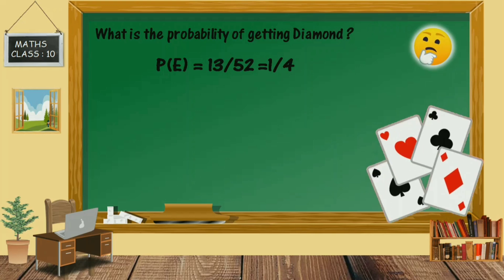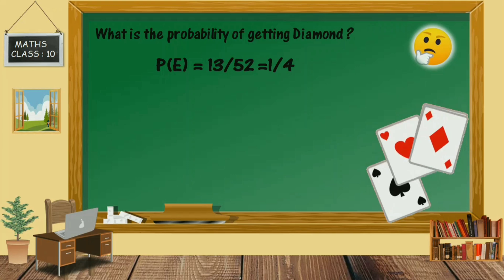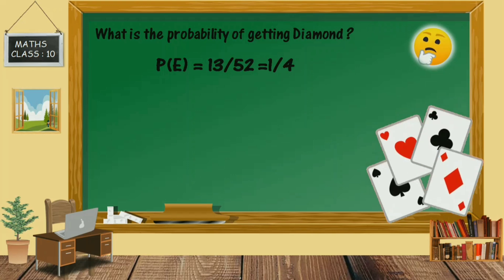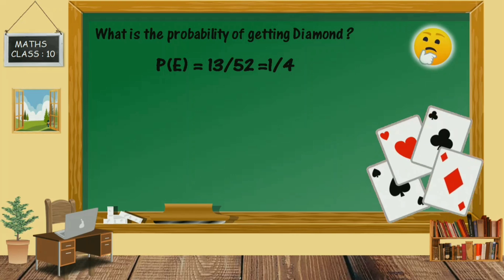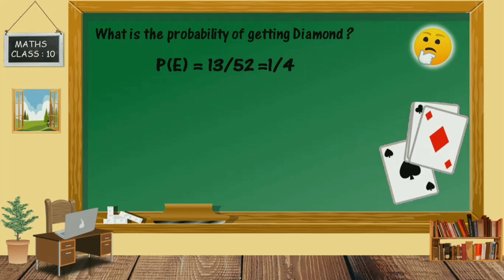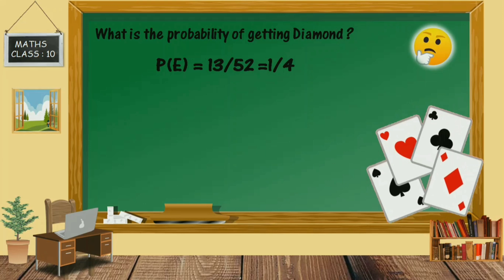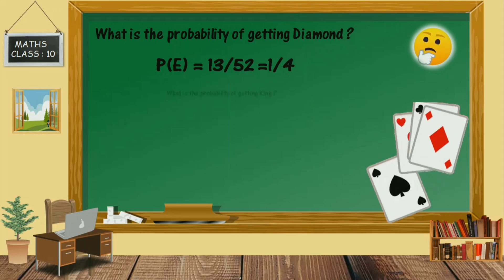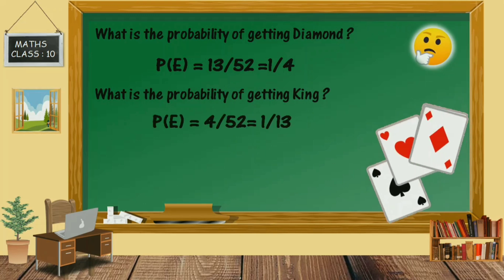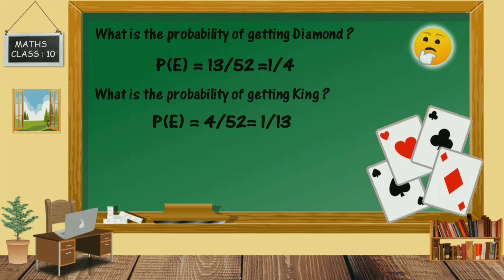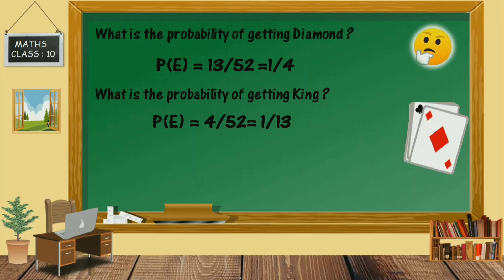Now, if you pick up a card from a well-shuffled deck of cards, what is the probability of getting a king? The probability is going to be 1 by 13, because the number of favorable outcomes is 4 and the total outcome is 52. So 4 by 52 equals 1 by 13.